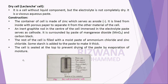Now we will discuss the dry cell. The dry cell is also known as a cell without a liquid component, but the electrolyte is not completely dry — it is a viscous aqueous paste.